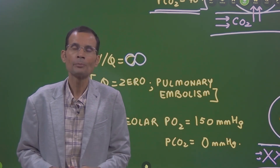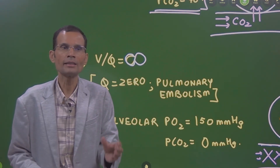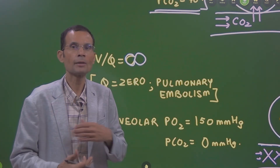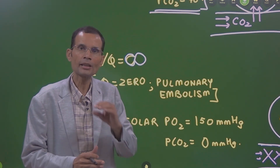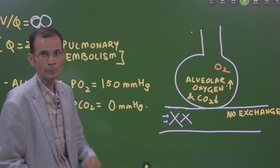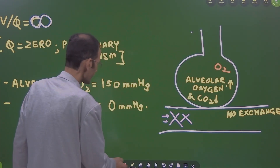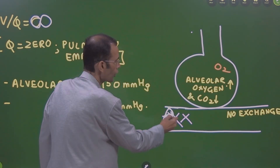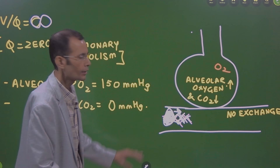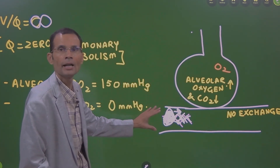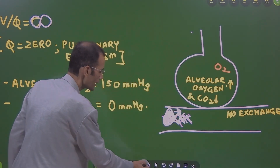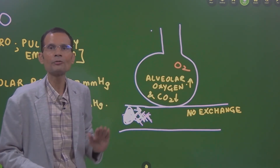Just to give a quick review: there is a thrombus in some part of the circulation; this thrombus gets detached, circulates, comes to the lungs, and gets stuck somewhere in the pulmonary circulation. That is called pulmonary embolism. Beyond that obstruction point, there is no blood flow — the pulmonary embolism has obstructed blood flow completely.